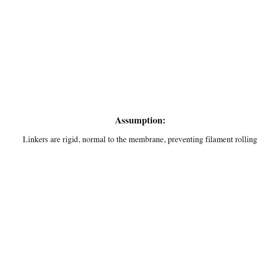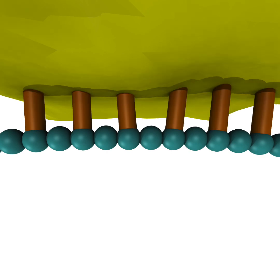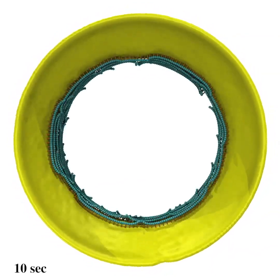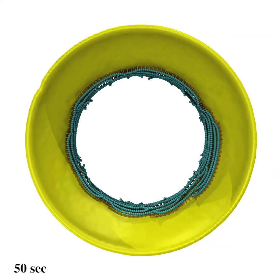Next, we assumed that several proteins that bind FtsZ form rigid linkers, so the linkers remain normal to the membrane surface and prevent filament rolling. Our simulations of this model show that the filaments cannot constrict the membrane as they bend and treadmill around.